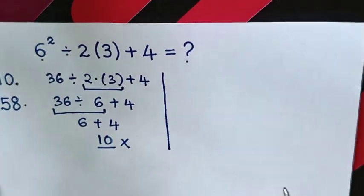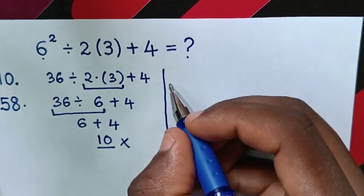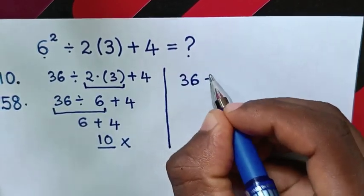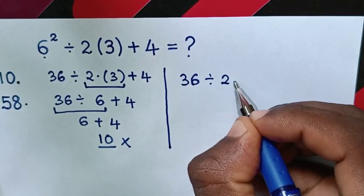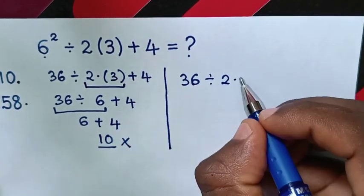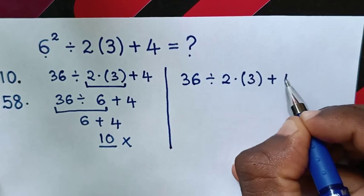it can be the correct answer. From 6 square is 36. Then, divide by 2, then times brackets 3, then plus 4.